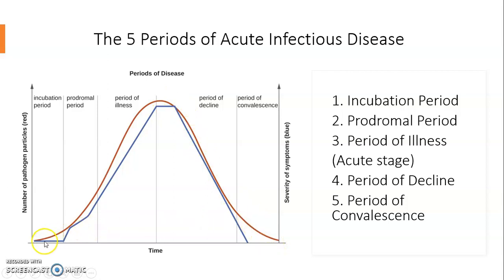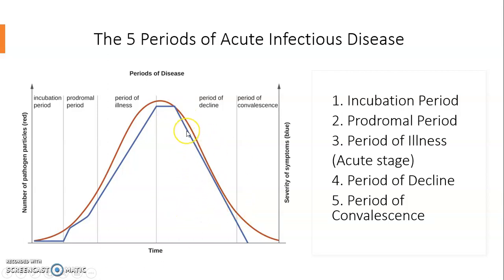The blue line also starts off at zero. It comes down to crest and it stops at the prodromal period. Then it goes up and continues to increase, then crests again right in the middle of the period of illness. Then it starts to decline all the way down to the period of convalescence. Both of these lines show the periods of disease and how they increase and decrease over time.